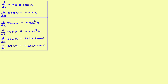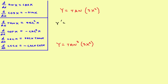Let's take a couple more. The only difference between these is this is the tangent and this is the tangent cubed. For the first one, y prime: the derivative of the tangent is the secant squared, so this becomes secant squared of — that's the derivative of the outer part — then rewrite the inner part, times the derivative of what's on the inside, which is 6x, and you are done.